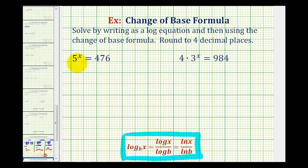So to solve 5 raised to the power of x equals 476, we're going to write this as a log equation. The base is 5, and a logarithm is an exponent, so the log is equal to x. Our number is 476, so we have log base 5 of 476.